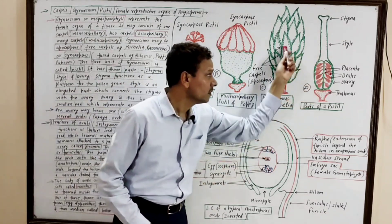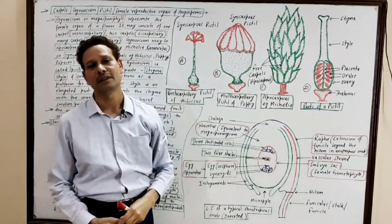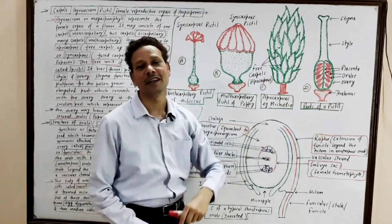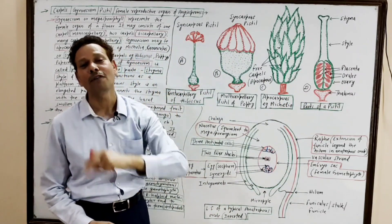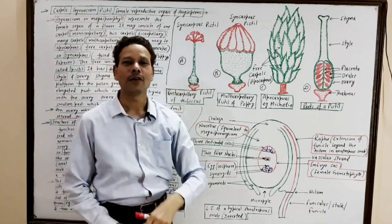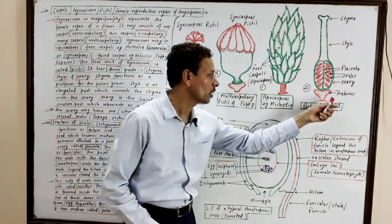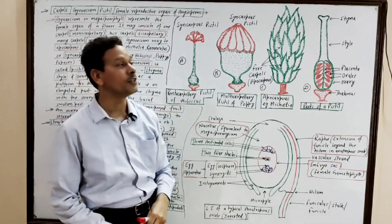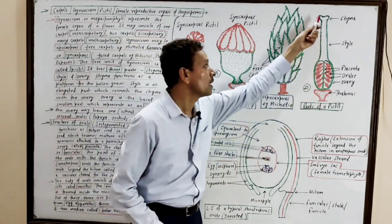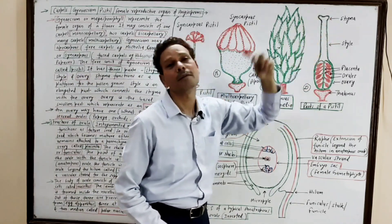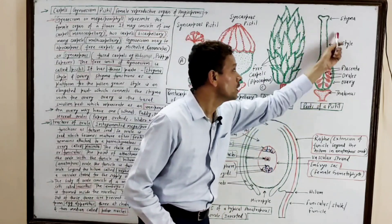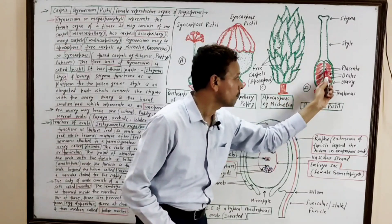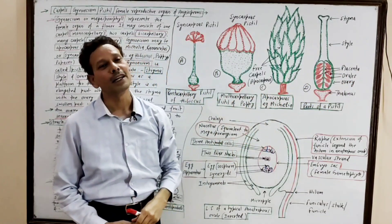This is a single free unit of gynoecium — that is a pistil. The free unit of the gynoecium, the female reproductive organ of angiosperms, is the pistil. Each pistil is differentiated into three parts: the terminal part is the stigma; the elongated stalk-like structure is the style; and the lower basal swollen part is the ovary.